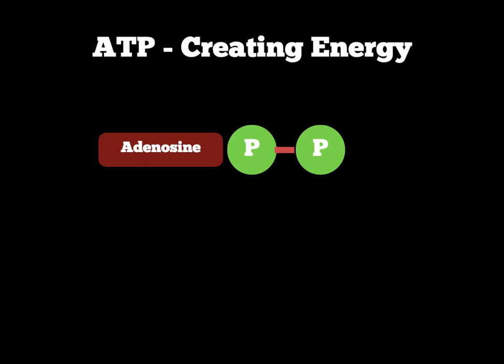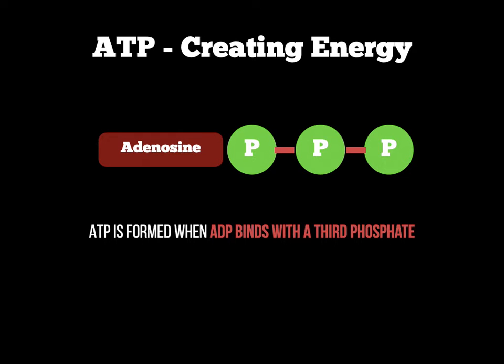The easiest way to do this is to draw it into your notes as we go. On the screen we have an adenosine molecule and two phosphates — the green peas. That whole image is what we call adenosine diphosphate. It's called diphosphate because there are only two phosphates. If we want to change adenosine diphosphate into ATP — adenosine triphosphate — we need to add another phosphate. ATP is only formed when ADP binds with the third phosphate, so it must have three phosphates.